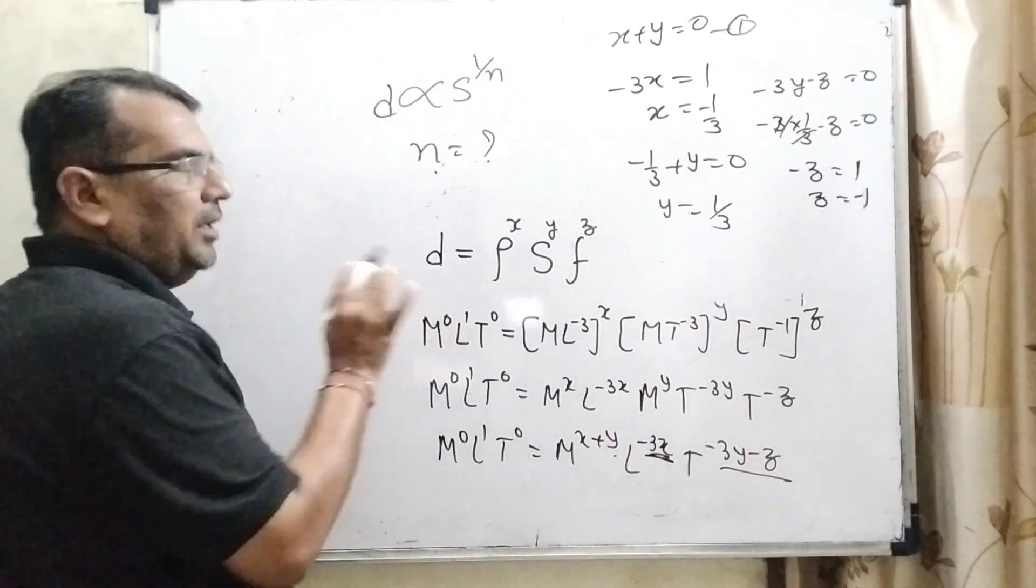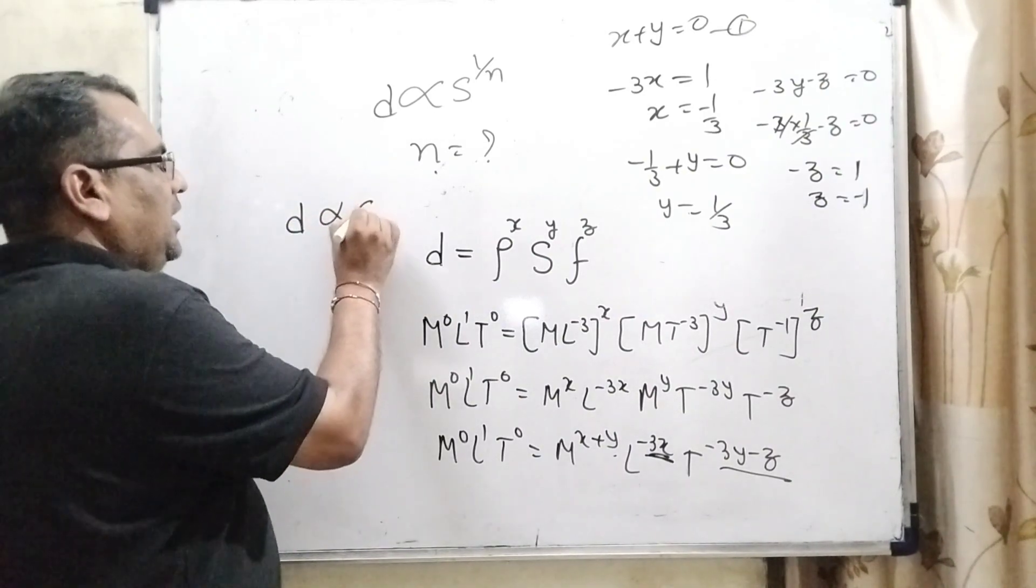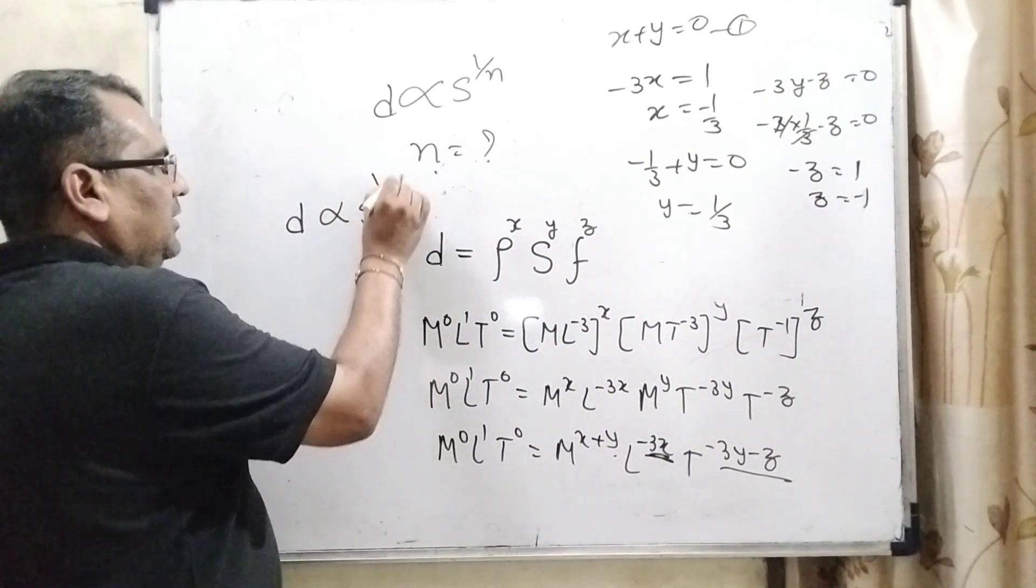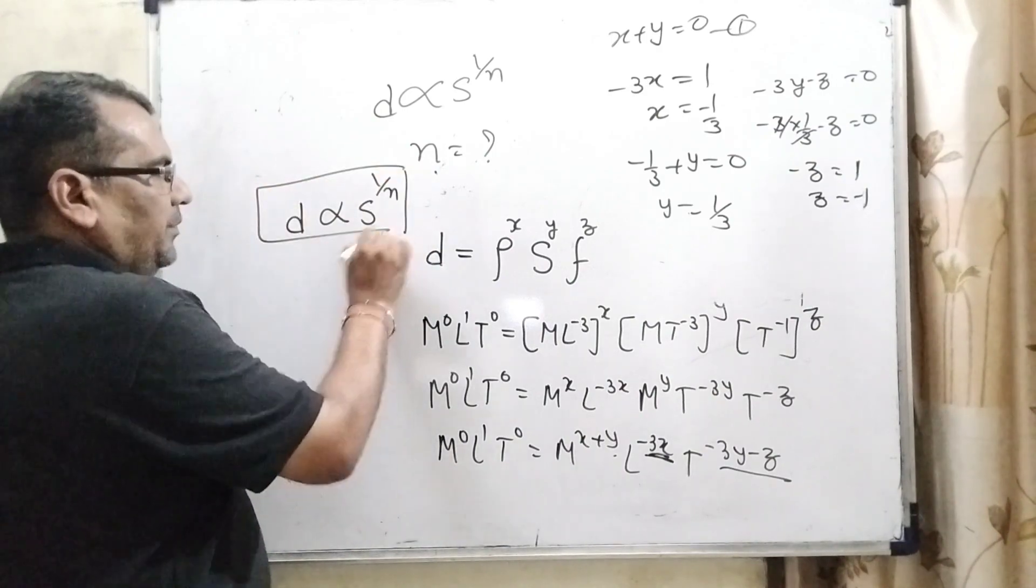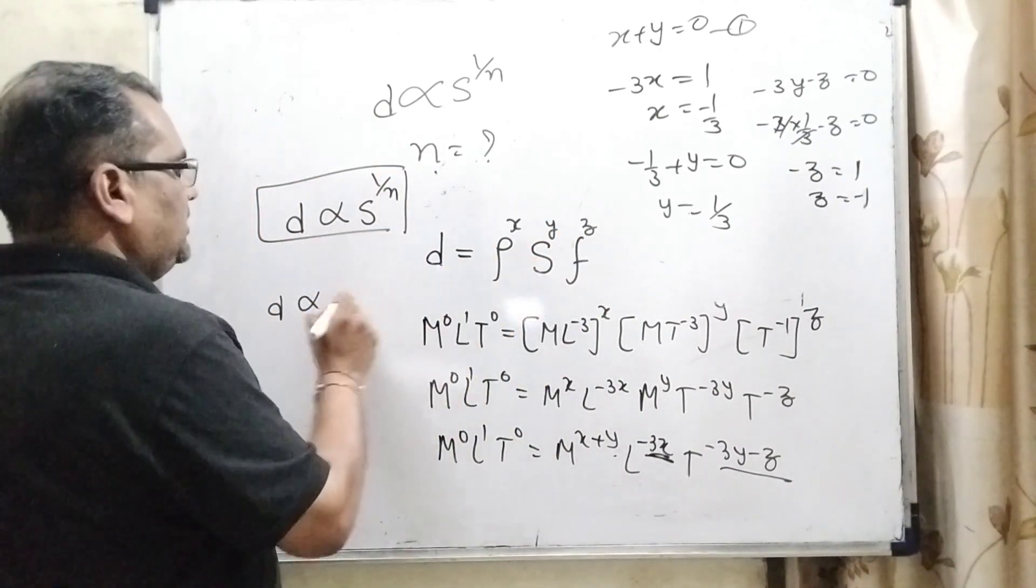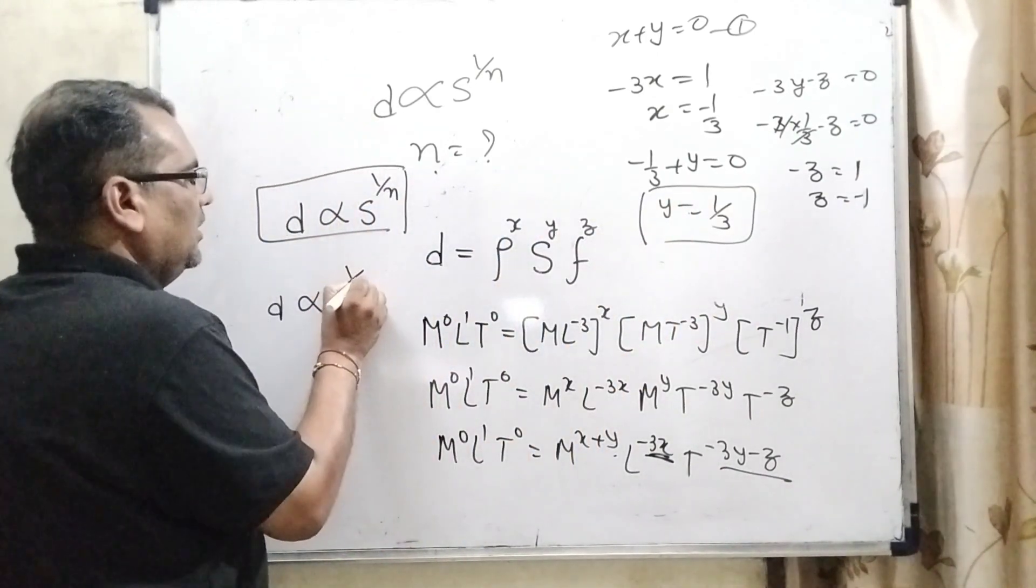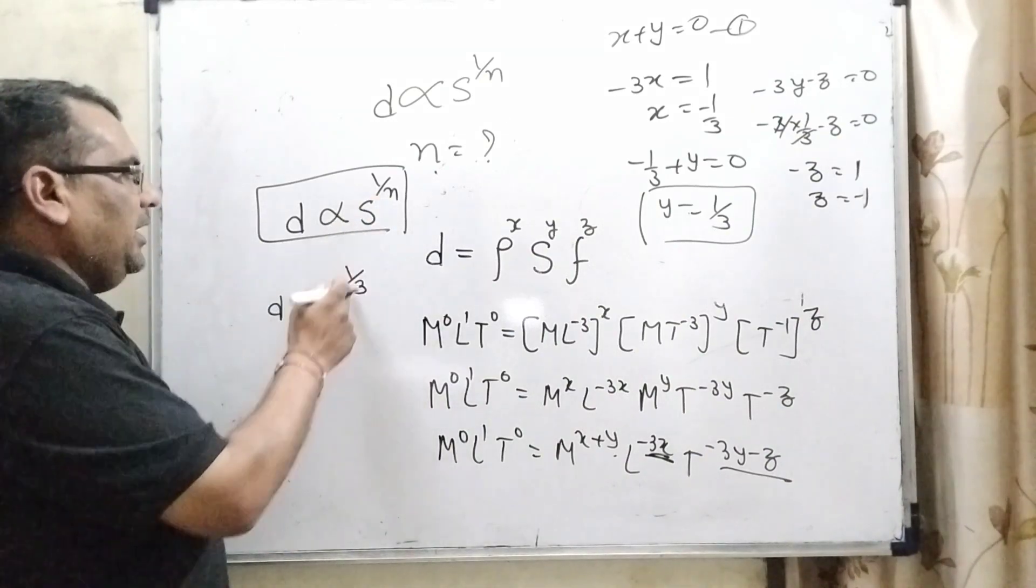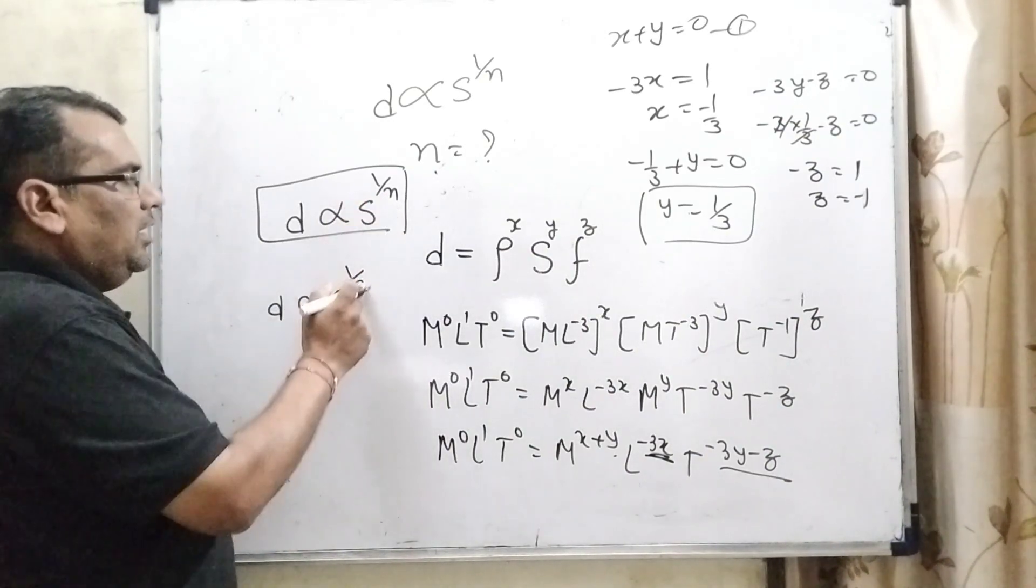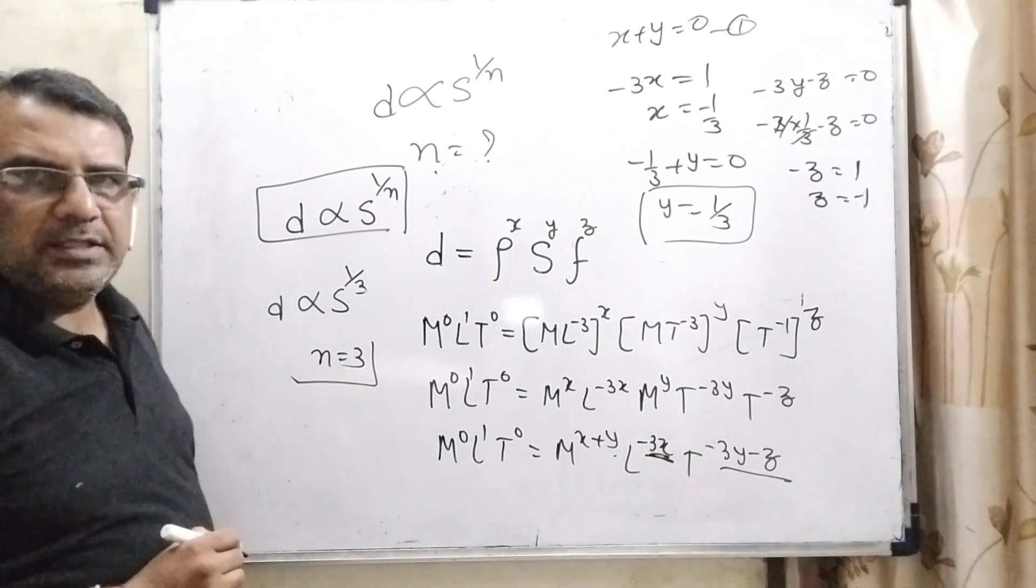Here we have given in the question d is directly proportional to S^(1/n). But here d is proportional to S^y. What is the value of y? y = 1/3. Now by comparing these terms, n = 3. So it is the correct answer.